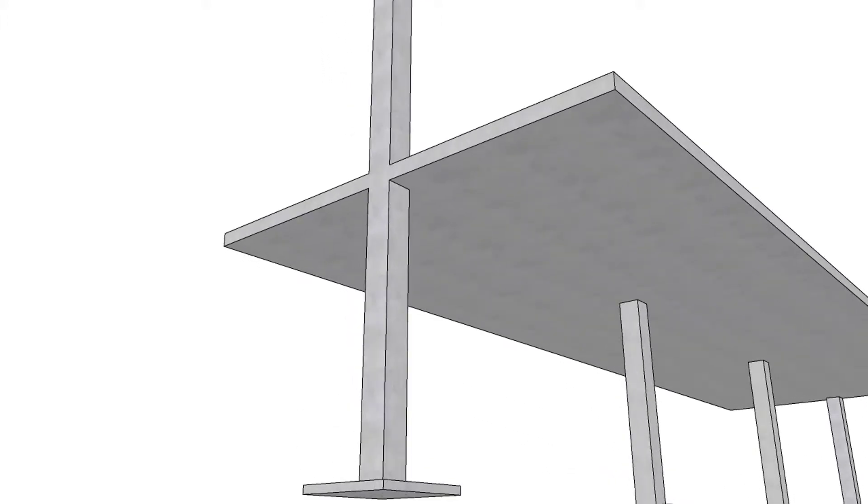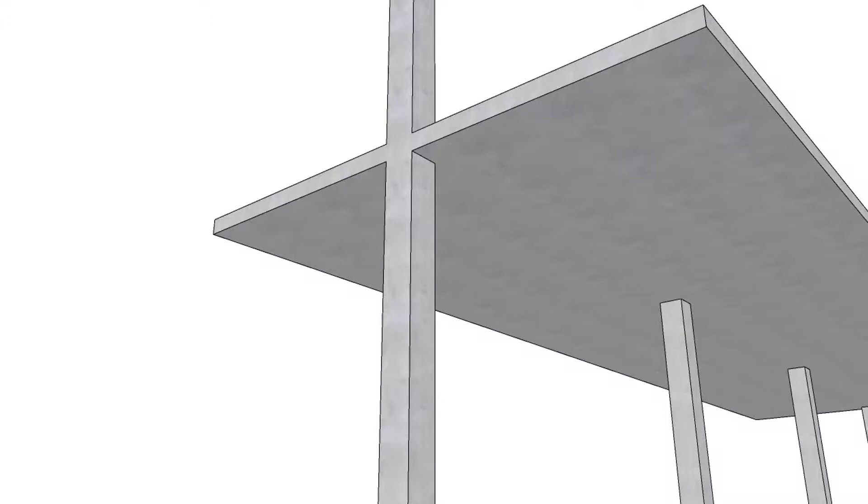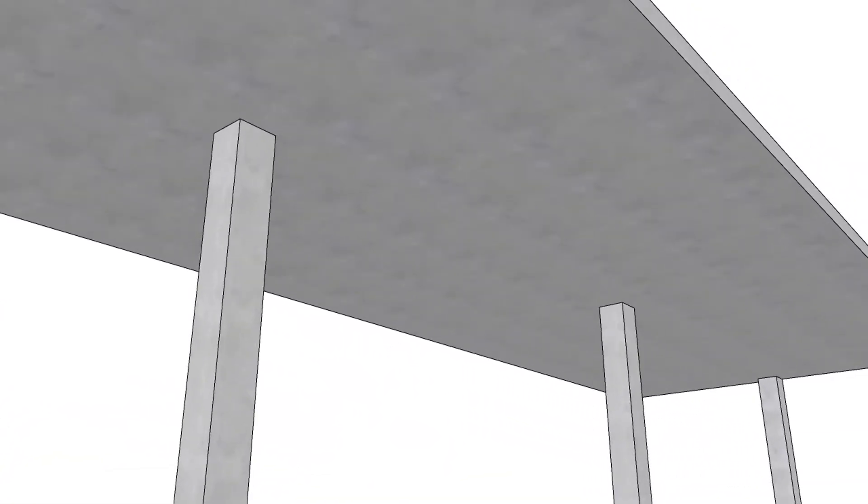The flat plate system has the advantages of simple construction, formwork, and a flat ceiling, the latter of which reduces ceiling finishing cost since the architectural finish can be applied directly to the underside of the slab. This system is primarily used in buildings with low to moderate live loads, such as residential apartments.